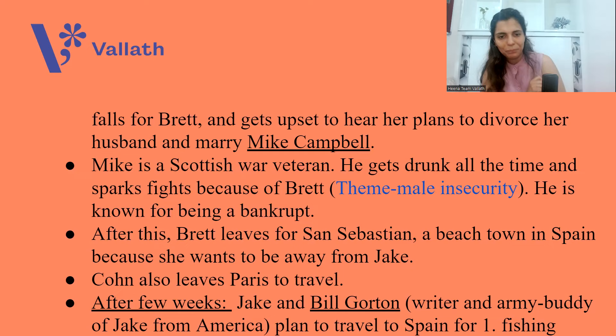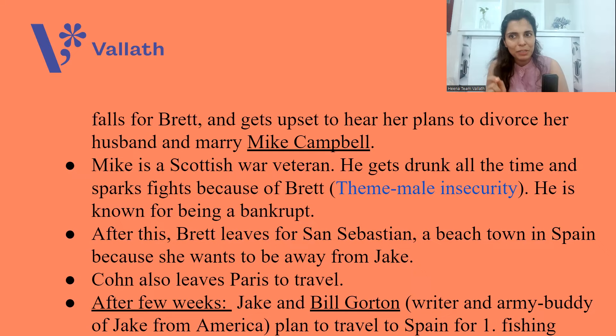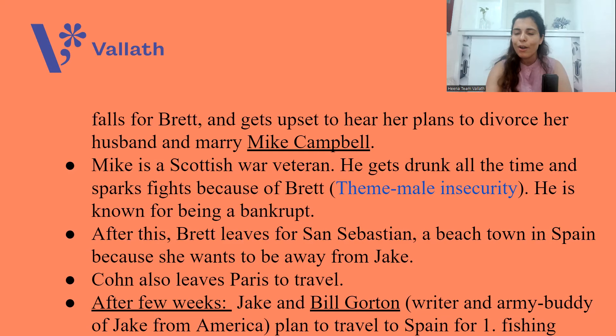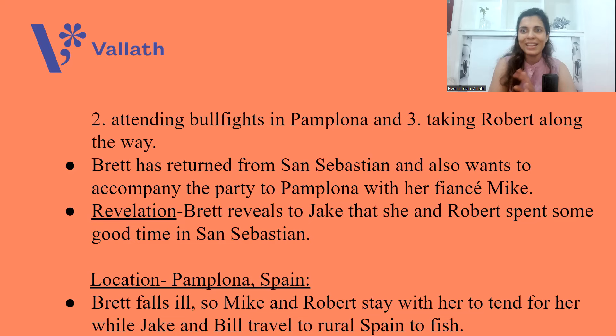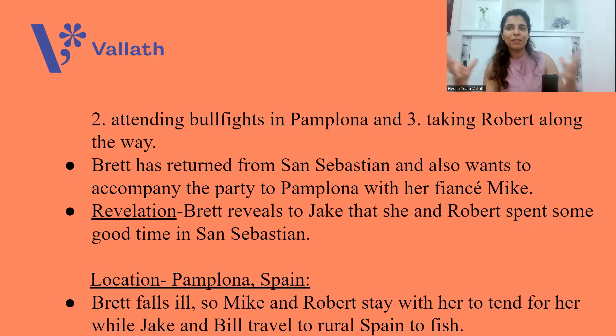Brett leaves for San Sebastian, a beach town in Spain, because she wants to be away from Jake — she still has feelings for him but cannot be with him because he is impotent. Cohn also leaves Paris to travel. After a few weeks, another character enters: Bill Gorton, an army buddy of Jake from America. Bill comes to meet Jake in Paris, and both of them plan to travel to Spain — first for fishing, second for attending bullfights in Pamplona, and third taking Robert along the way. Bullfighting, as in the movie Zindagi Na Milegi Dobara, will be very important in this novel.